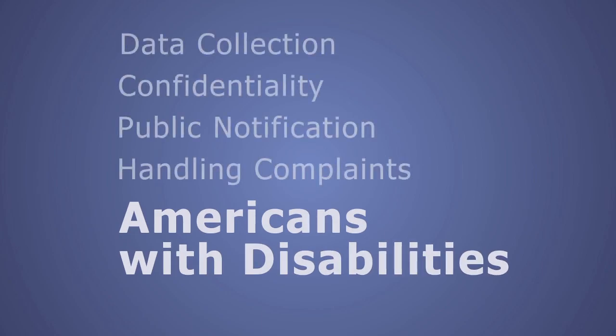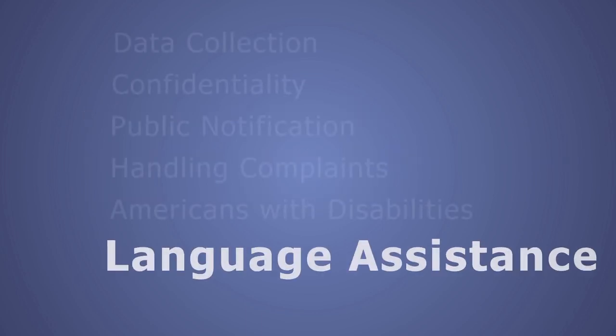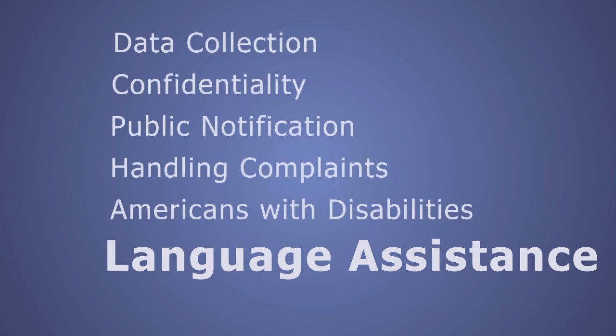The Americans with Disabilities Act prohibits discrimination based on disability in all services, programs, and activities provided to the public by state and local governments. Persons with disabilities must have program accessibility, effective communication with staff, and easy access to buildings. Sponsors also have a responsibility to take steps to ensure meaningful access to their programs and services by persons with limited English proficiency, or LEP. This might include providing CACFP information and forms in appropriate languages, or providing translators to assist a participant and their family in obtaining program information or completing forms pertaining to the CACFP. It is not appropriate to use young children as translators for adults.